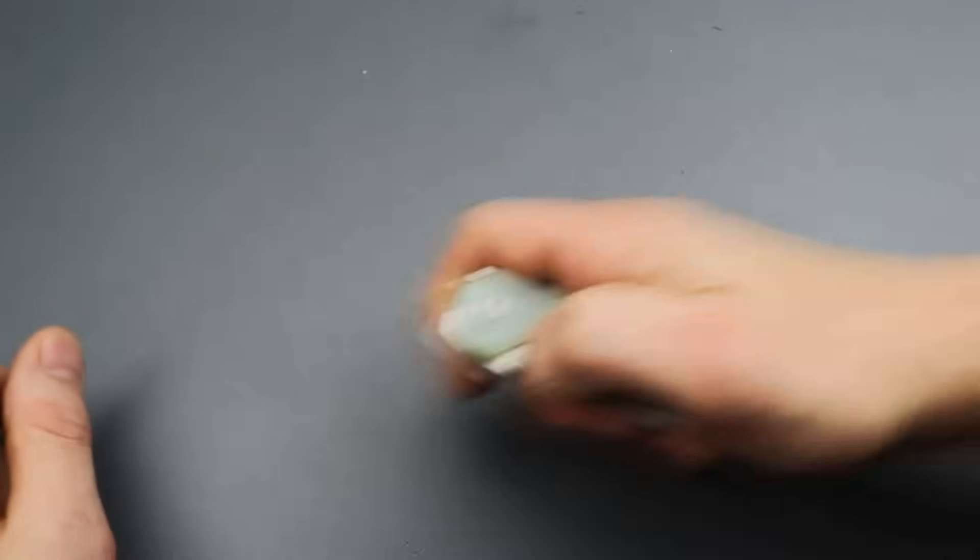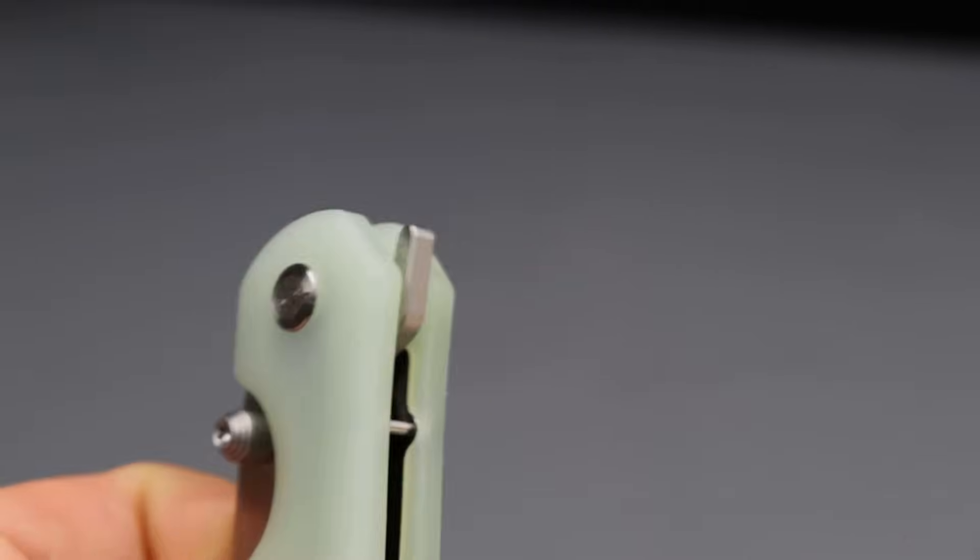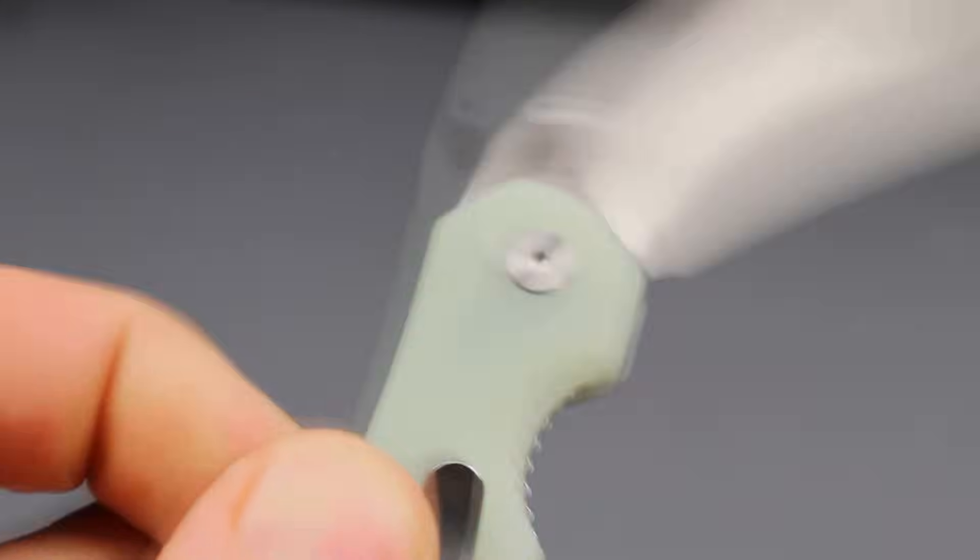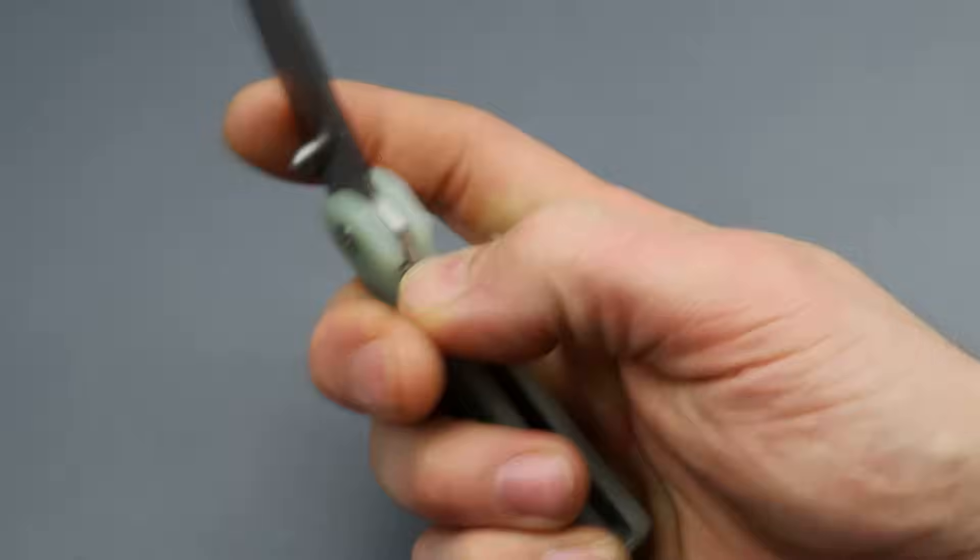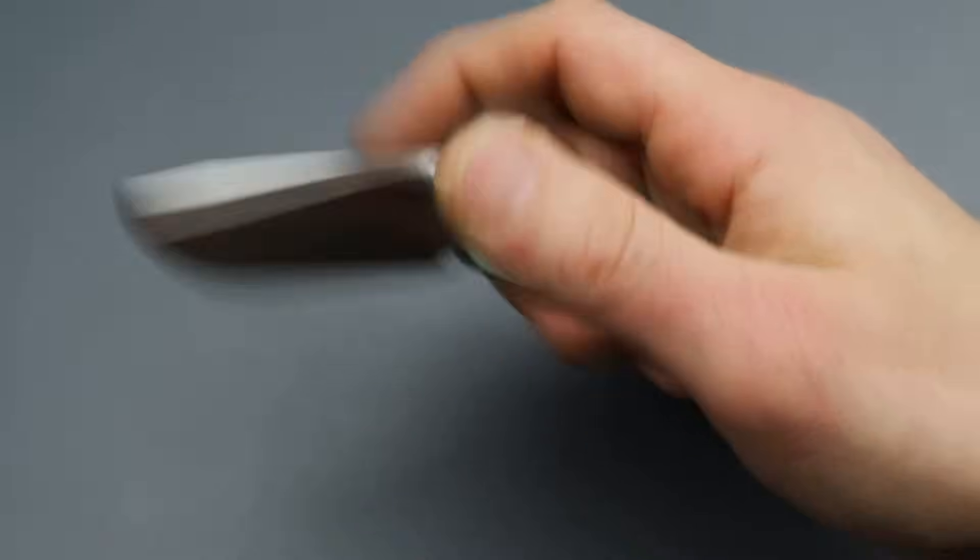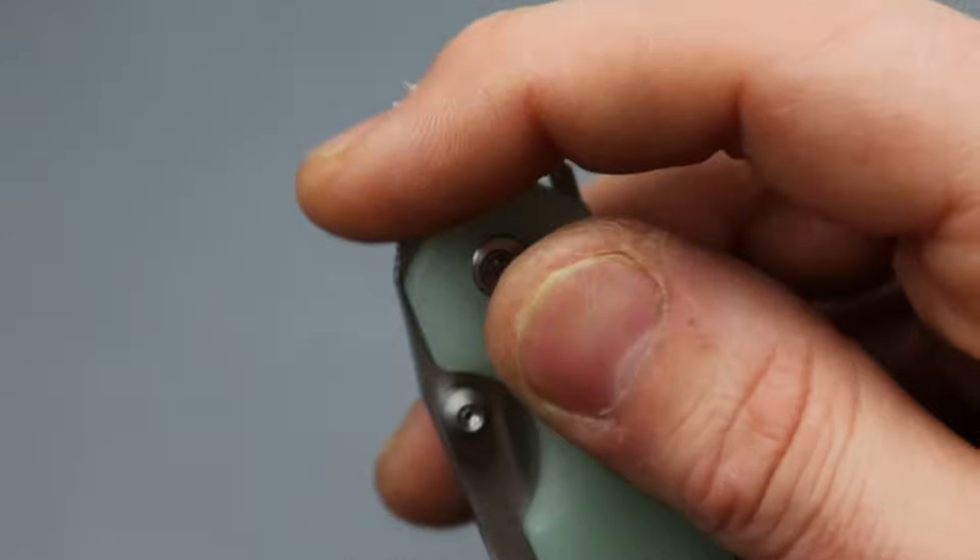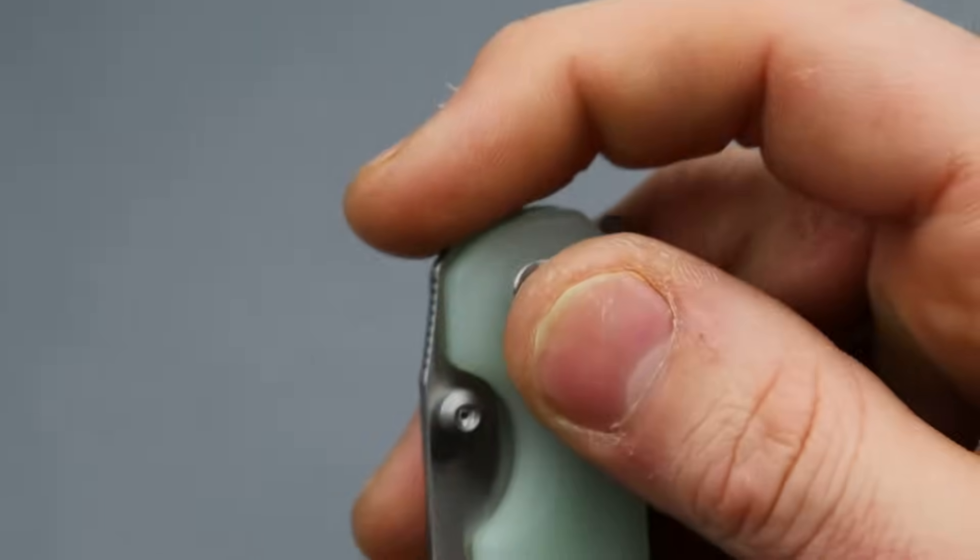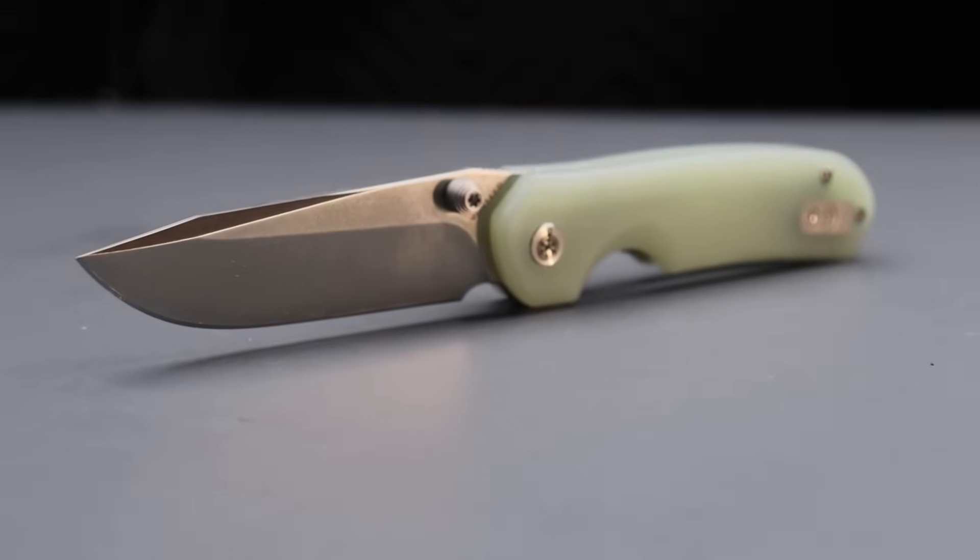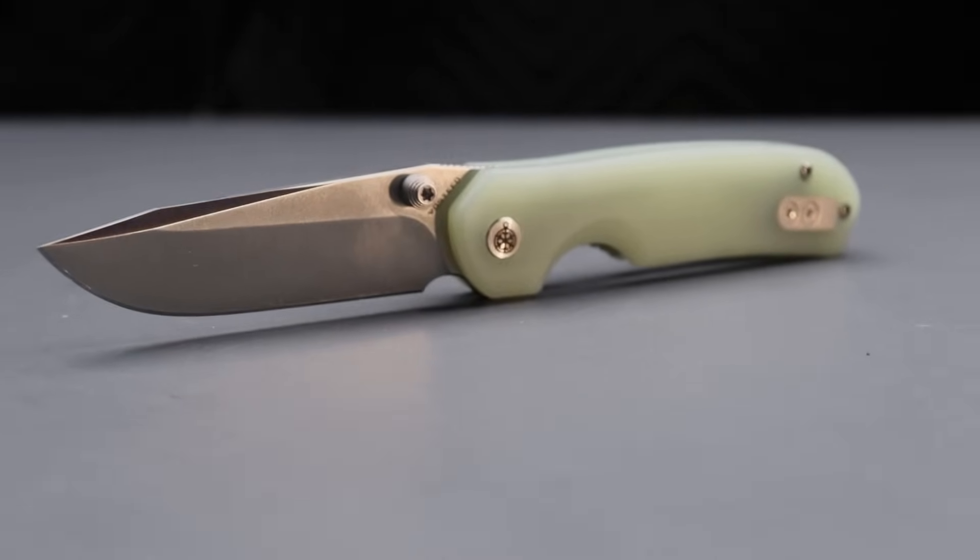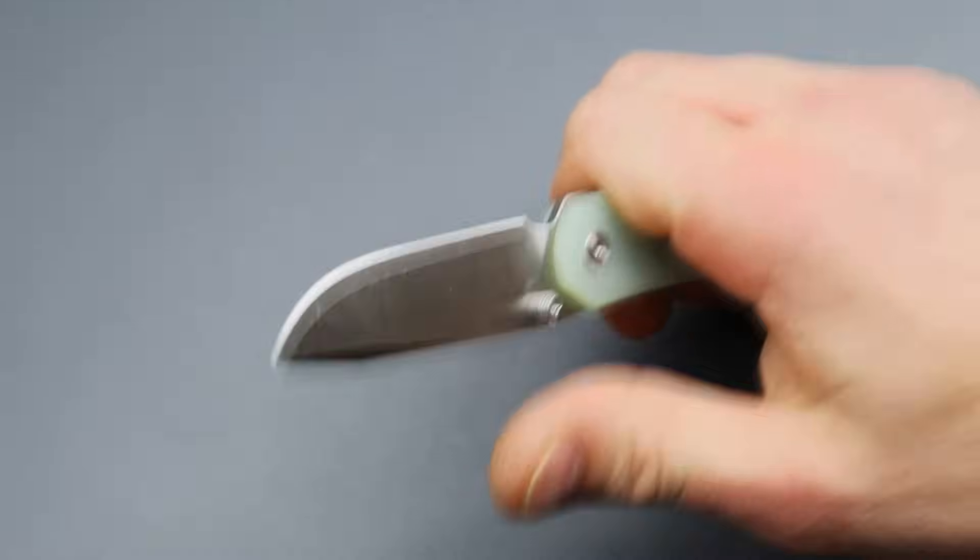But the next one, I don't know the name of it. It's a new model from them. Vosteed is the king of doing lots of deployments. You got a flipper tab. You got a very comfortable front flipper. They did a really good job on this front flipper, too. Look at this front flipper. Look at that jimping. It goes from, you can do it from the top. You can do it from the angle or corner of the front. Or you can go all the way around. Maybe not. I guess you kind of can. But it works really well, though. Especially for such a compact little knife. Because this guy is not big.